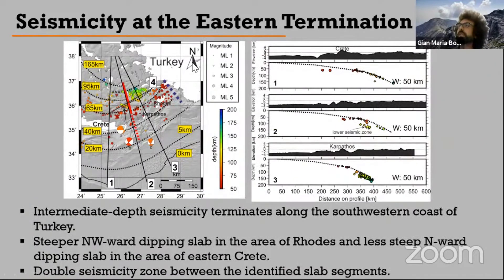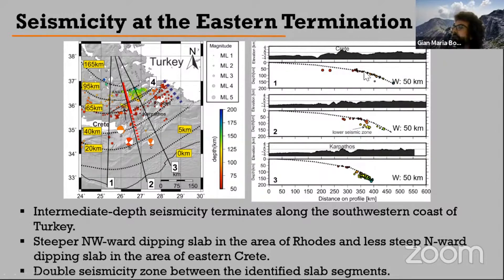At the eastern termination we also have local seismic network catalogs available — in particular the Aguilados catalog and the SikNet catalog. These provide refined models of the Wadati-Benioff zone, which is less steep and less active in the Crete area (profile 1) and becomes steeper and more active in the Rodos area. Between these two segments, we begin to observe a double seismic zone that we investigated further.